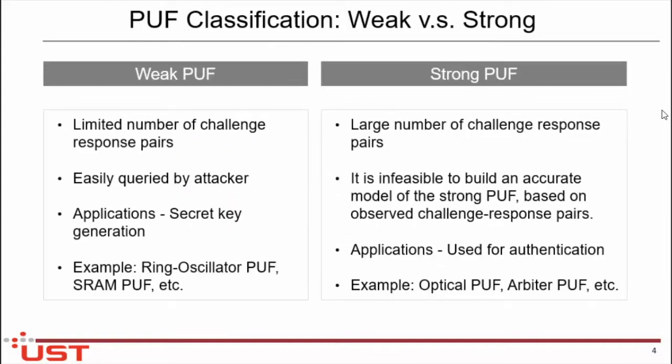We can classify PUF into two categories: weak and strong. In the weak category, the number of challenge-response pairs is very low compared to strong PUF, and because of that, it is very easily acquired by an attacker. In the strong PUF, it is very hard to predict any challenge-response pair even for the manufacturer. The application of weak PUF is secret key generation, and for strong PUF, it is for authentication and identification of devices. Examples of weak PUF are ring oscillator PUF, SRAM PUF, and butterfly PUF. Examples of strong PUF include optical DRAM and memory-based PUF like SRAM.